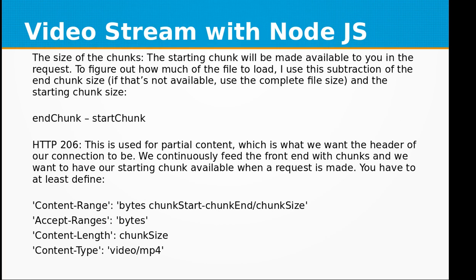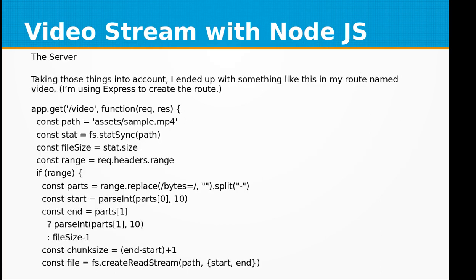HTTP 206 is used for partial content, which is what we set the header for our connection to be. We continuously feed the front end with chunks and we want to have our starting chunk available when a request is made. You have to at least define content-range, accept-ranges, content-length, and content-type.